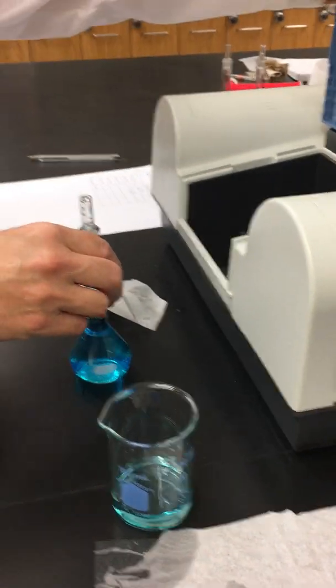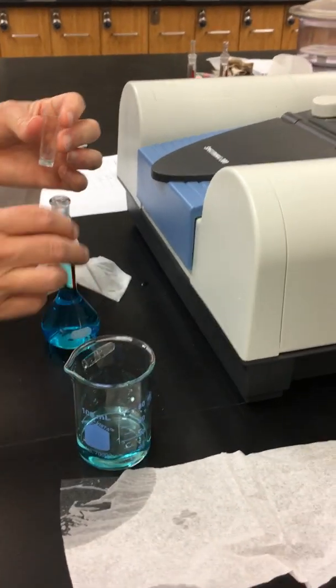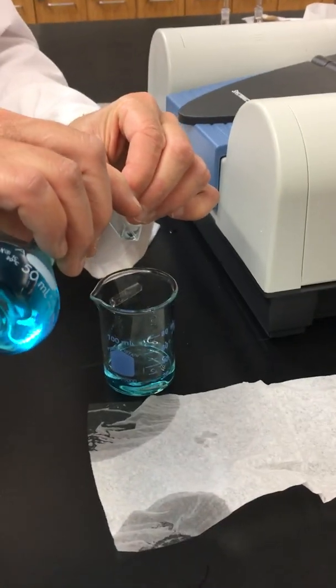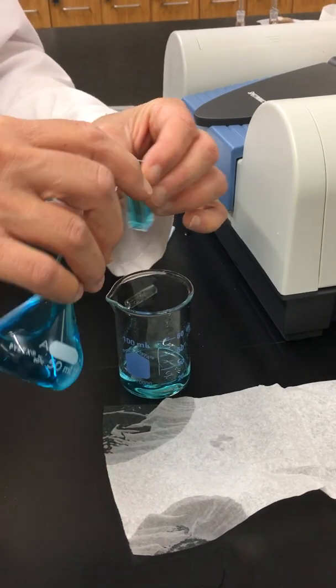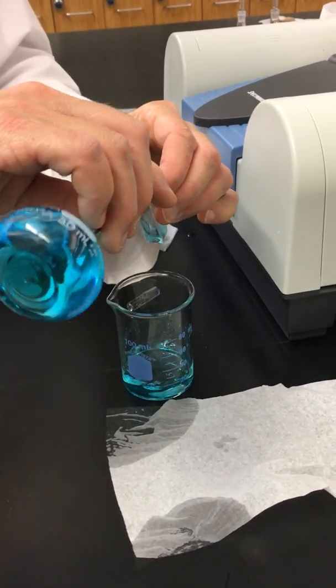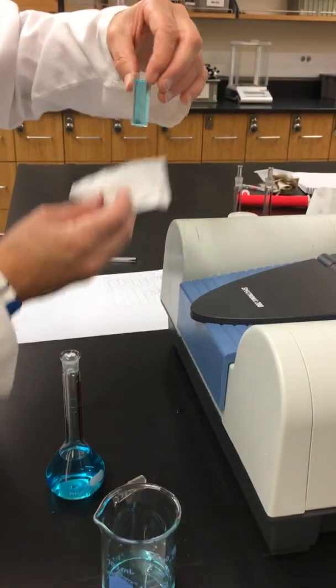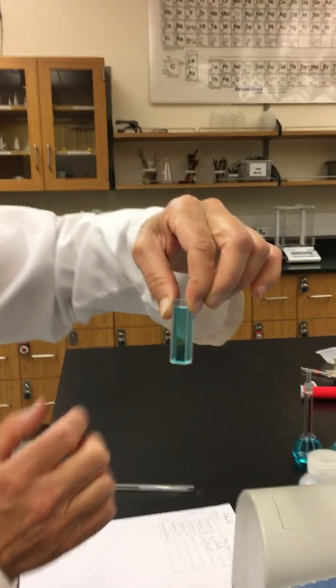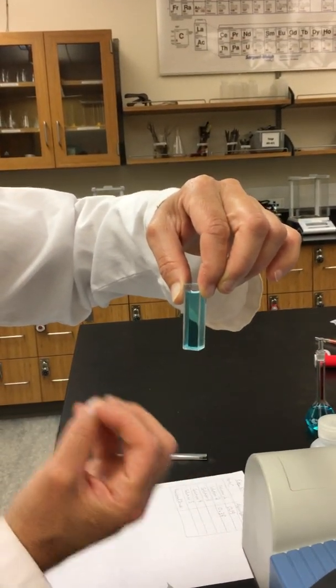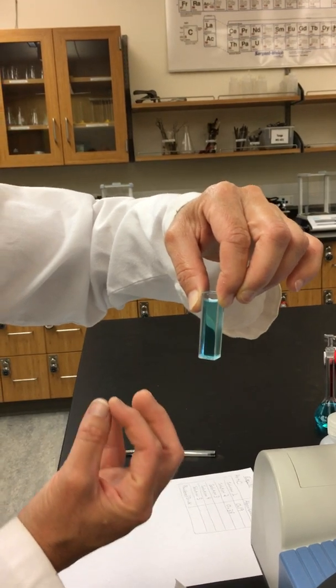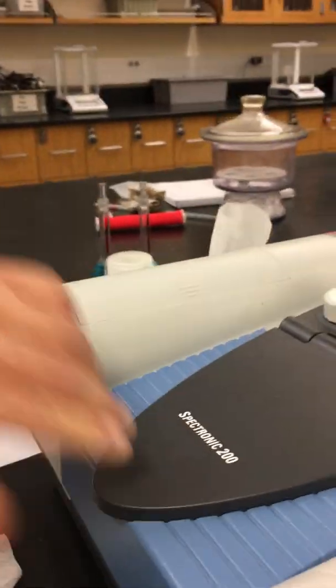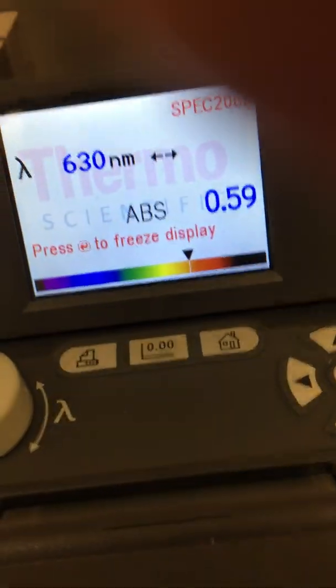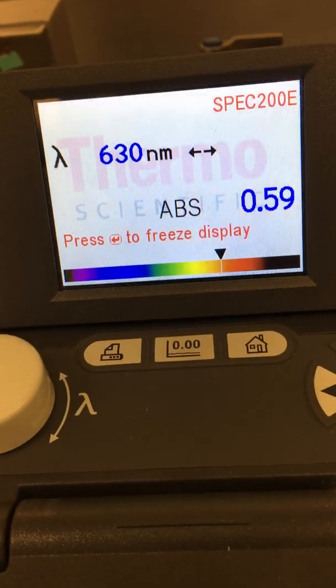We're done with solution two. We're now ready for solution three. My lovely assistant is passing my solutions to me. Same procedure, we're going to rinse it first. We'll wipe it off. Notice when I'm holding the cuvette, I'm trying to always make sure my hands are towards the top of the cuvette and I'm not grabbing it down low. This will help prevent getting any oil and stuff trapped on that cuvette that will throw off our readings. We'll place this in our spectrometer and we'll measure our absorbance of solution number three, which is 0.59.